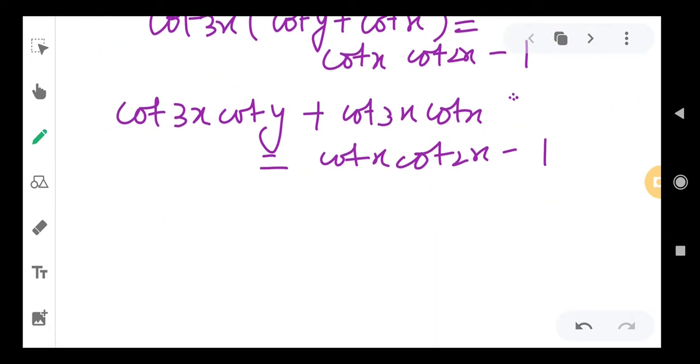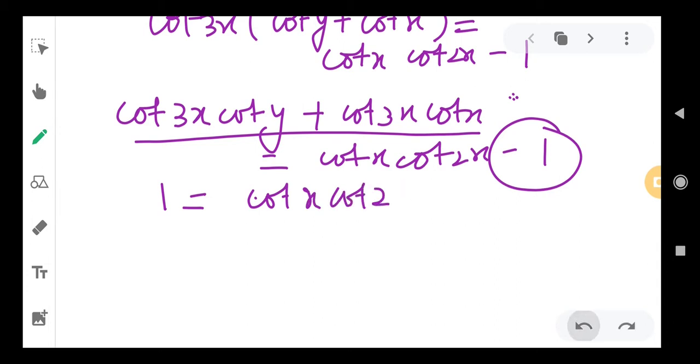So we move this 1 to the left side and the equation to the right side. So it becomes 1 equals cot x cot 2x... Right? And sorry, I think I made a mistake.